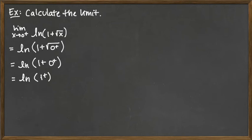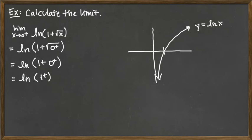So let's remind ourselves what the natural log of x function looks like. It has a vertical asymptote at the y-axis, so where x is equal to 0, and it crosses the x-axis at the x value of 1.